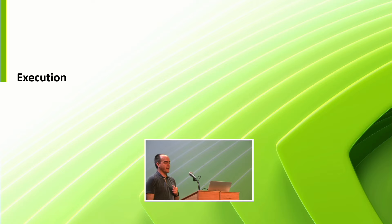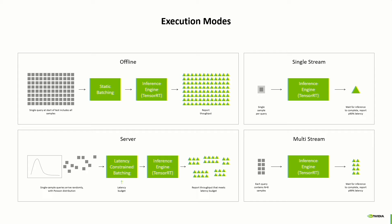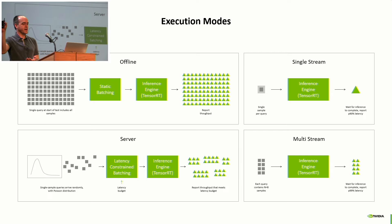There are four main execution modes for inference. Offline is batch processing — very similar to training — where you process as much data as quickly as possible, with large batch sizes and only caring about throughput. Single stream is the inferencing you do on a device like your phone: you ask a question and it comes back quickly without going out to the internet. What's important there is response time and latency.